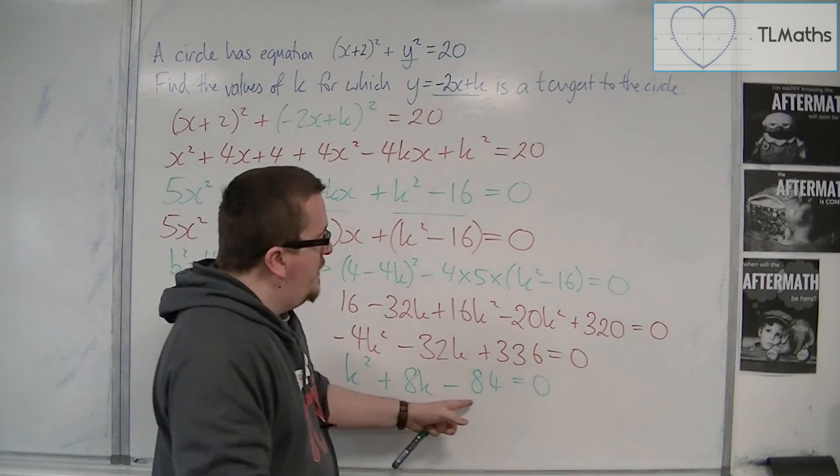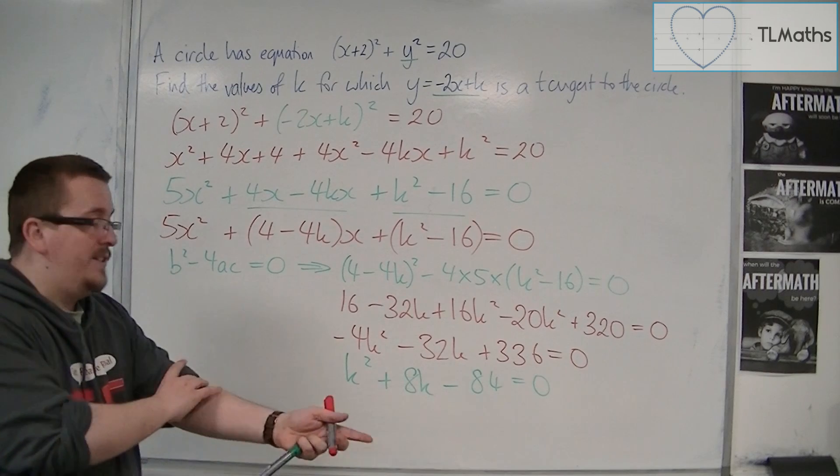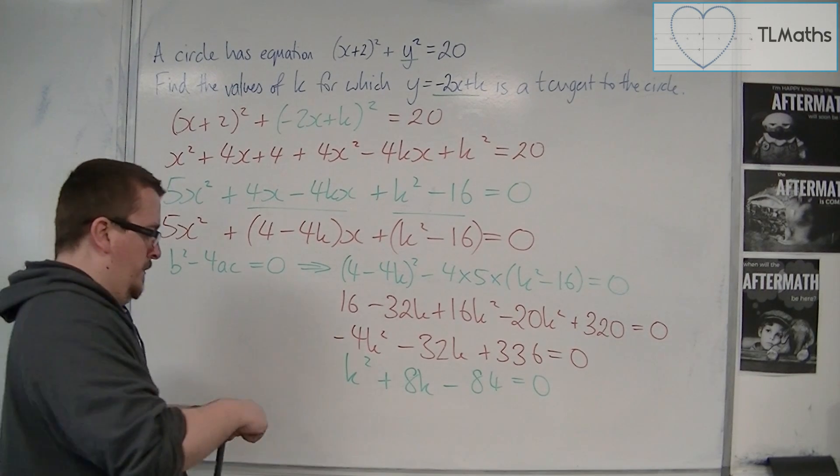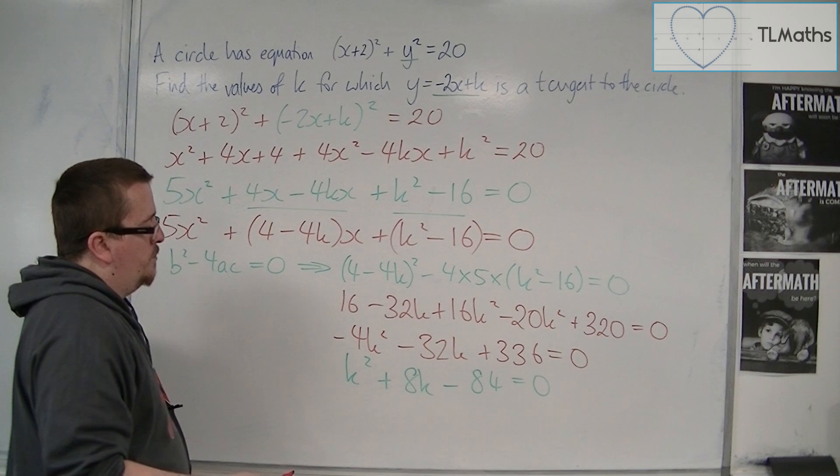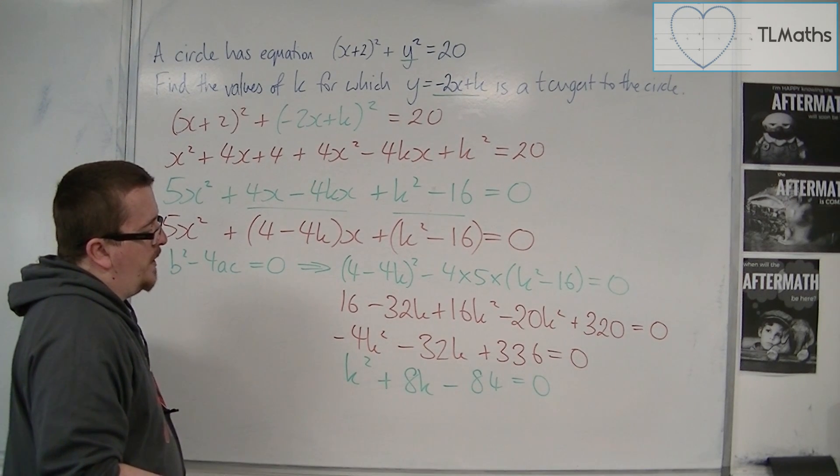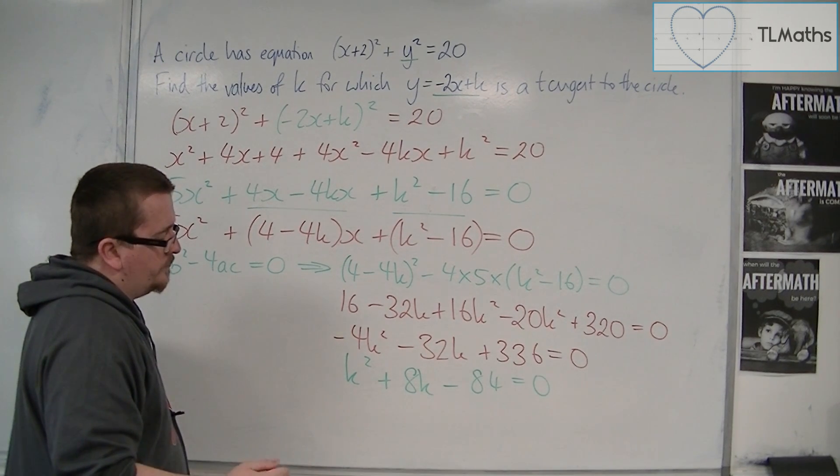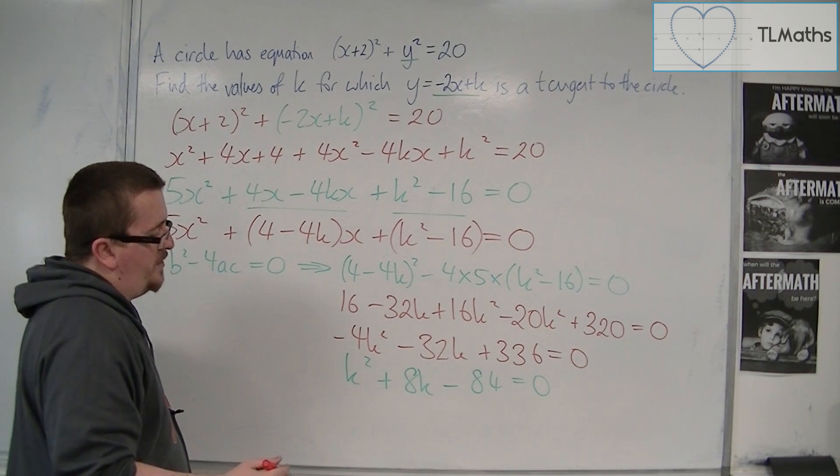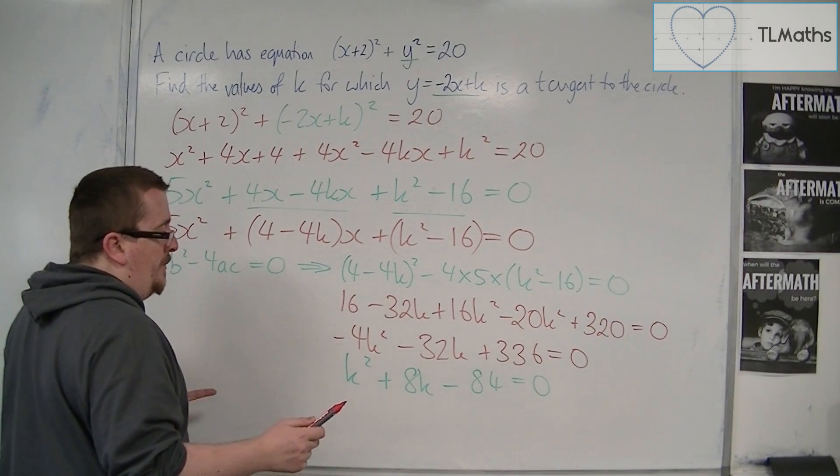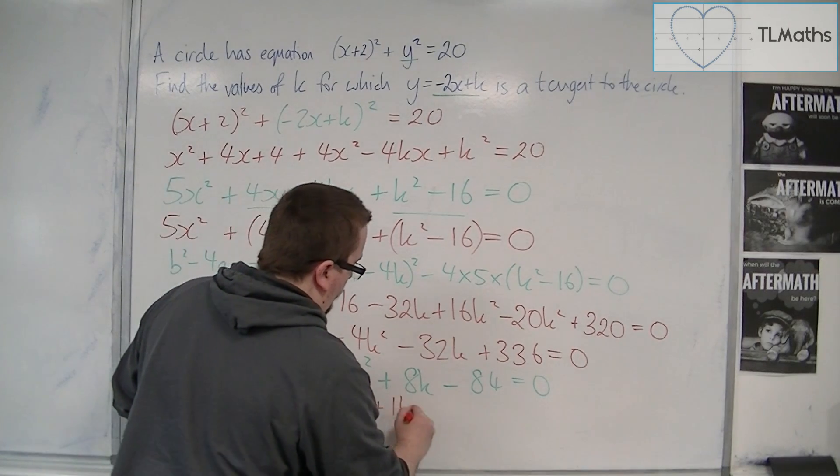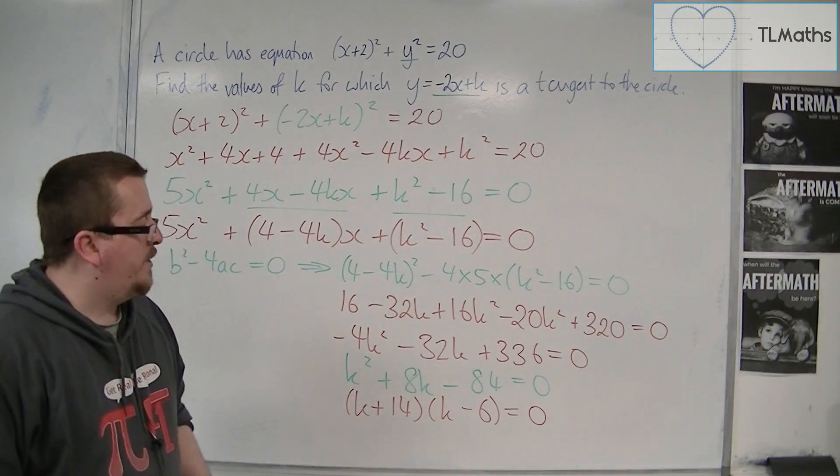Okay, so we're now looking for two numbers that multiply together to make -84 but add together to make 8. Okay, so 84, 42, 21. 7 goes into it 12 times. 14 goes into it 6 times. So 14 and 6 looks to be the correct way of doing this. So (k + 14)(k - 6) - that works. 14k take away 6k makes the 8k.